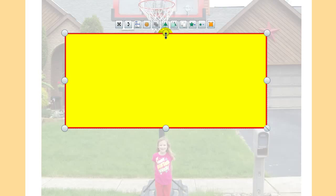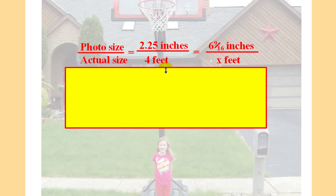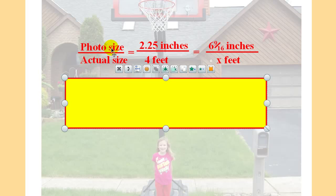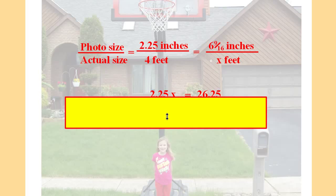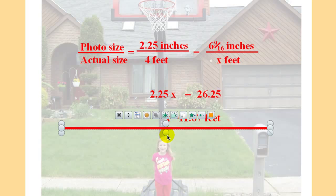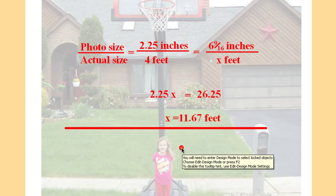And then the next slide is going to show the work. There's more than one way to set up the problem to be able to find the unknown. But I'm using the photo size of the photograph to the actual size. And we're making that comparison. Solving by cross multiplying is relatively easy. Students would have that prior knowledge to be able to solve a one-step equation.